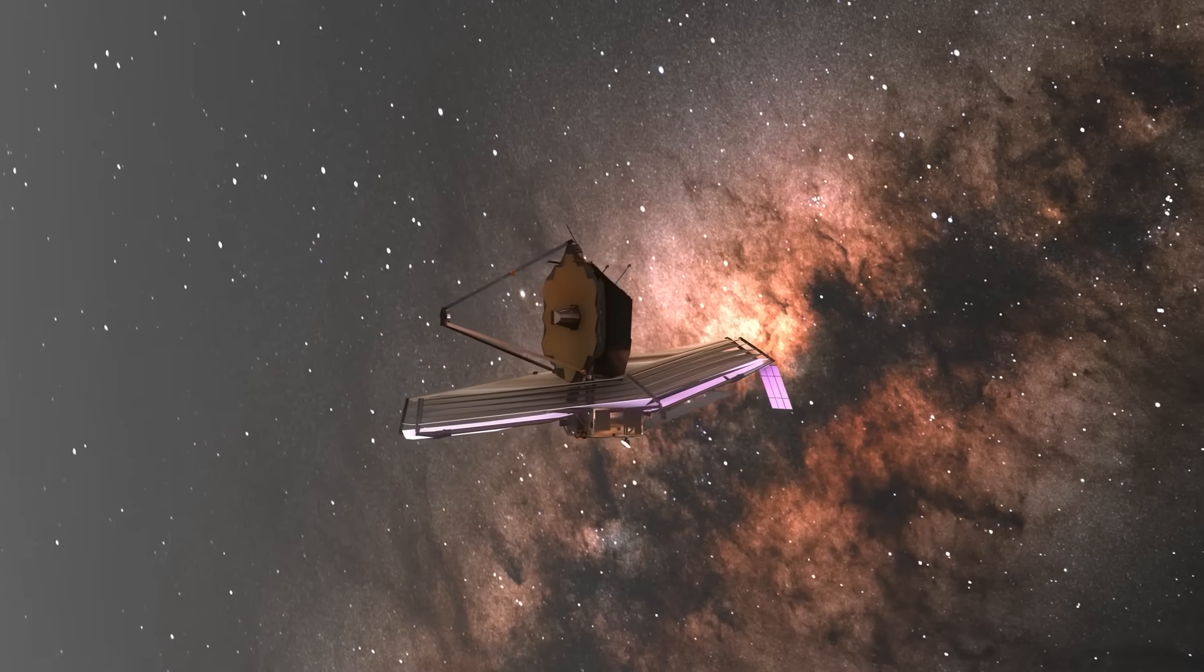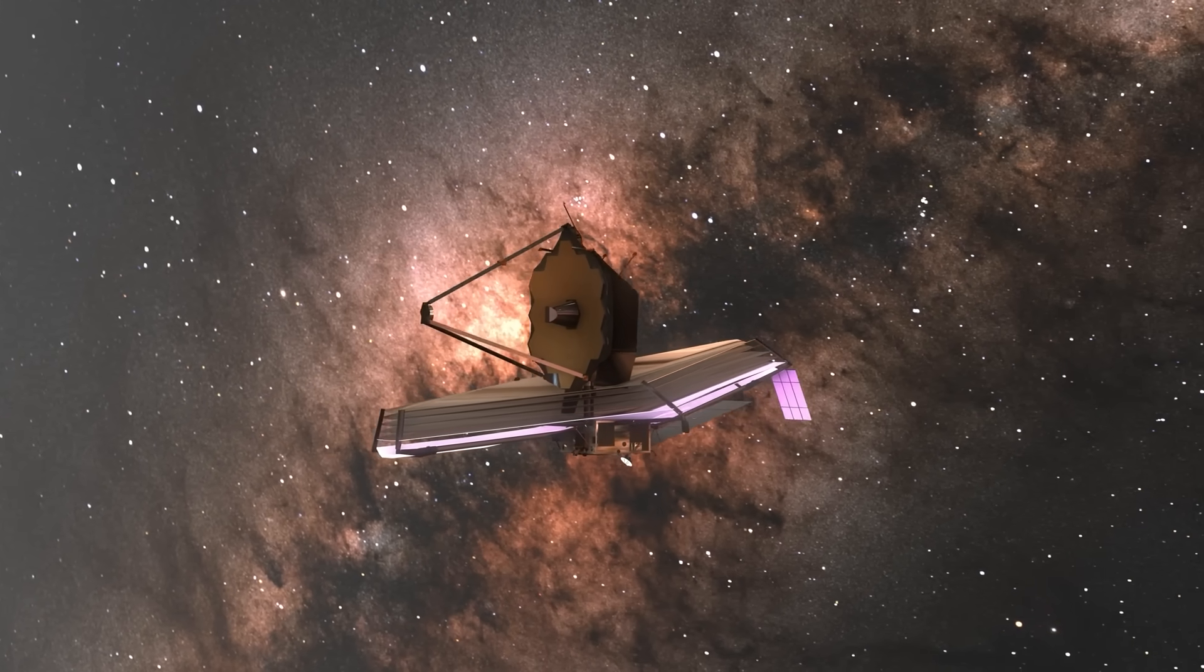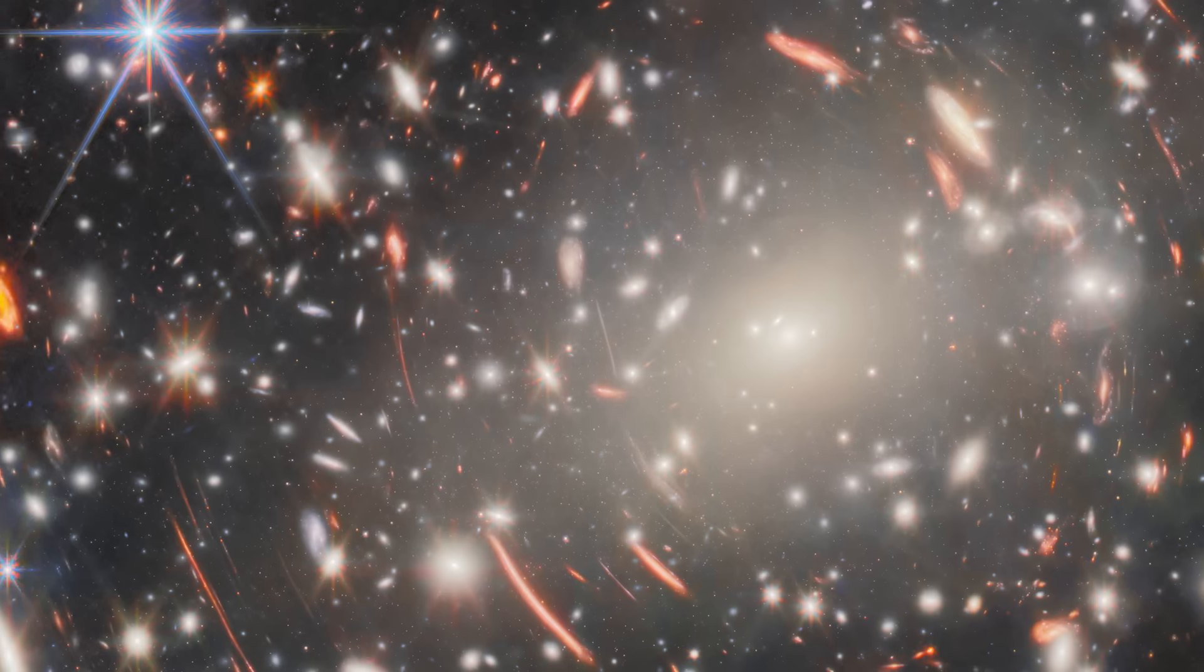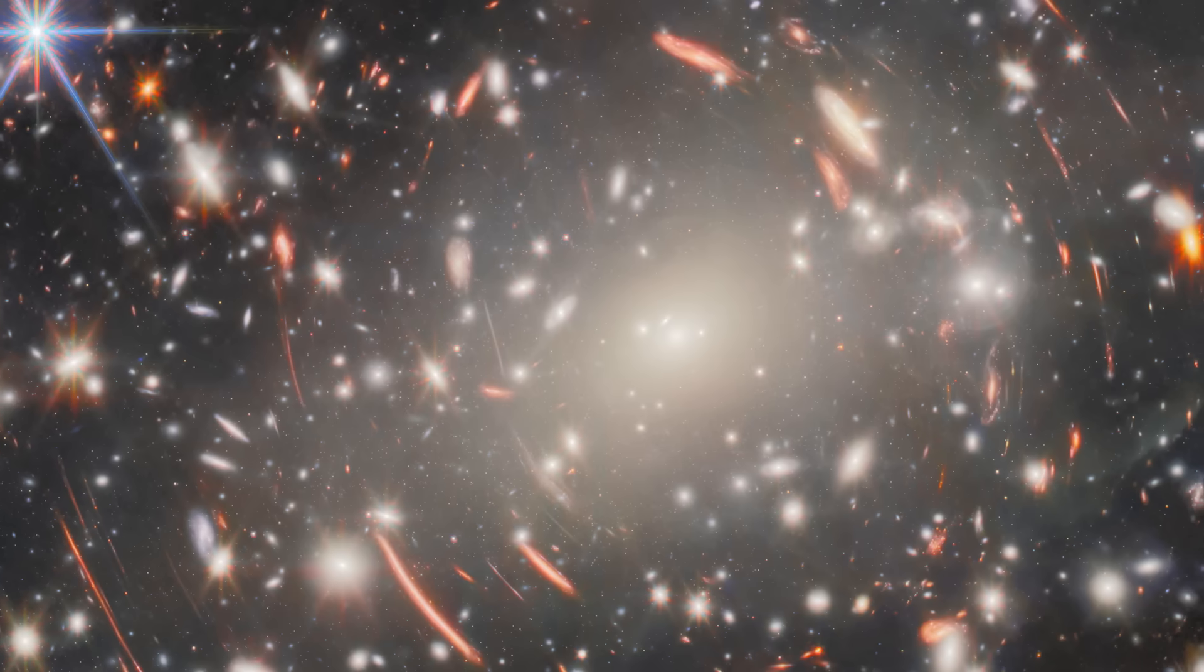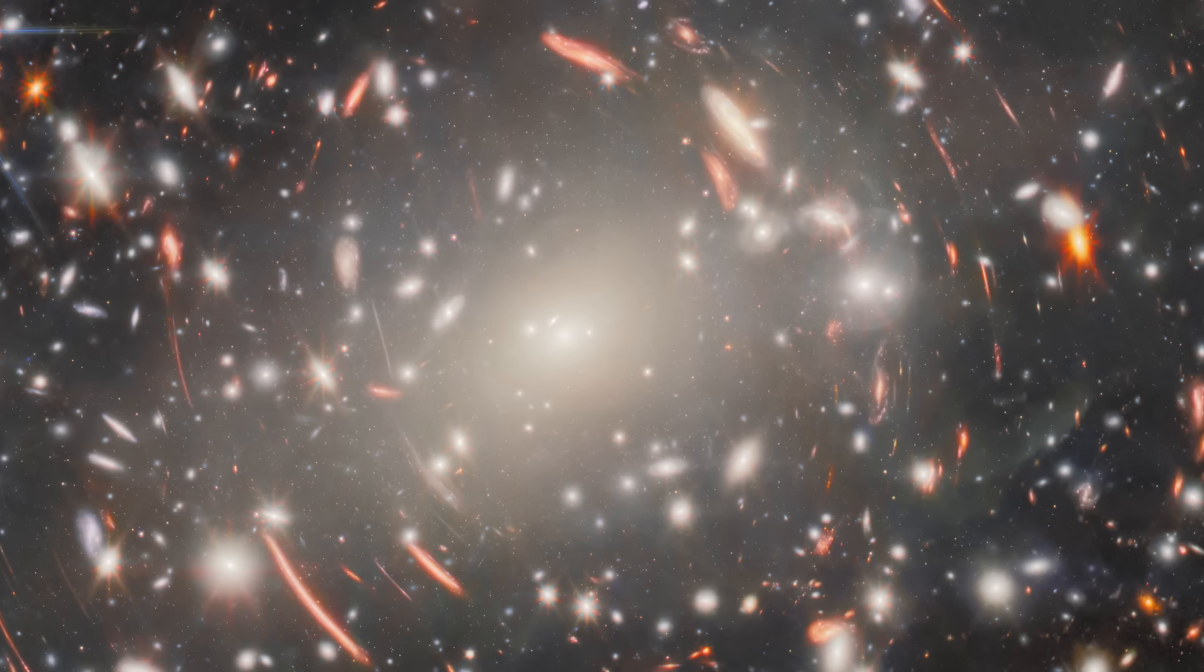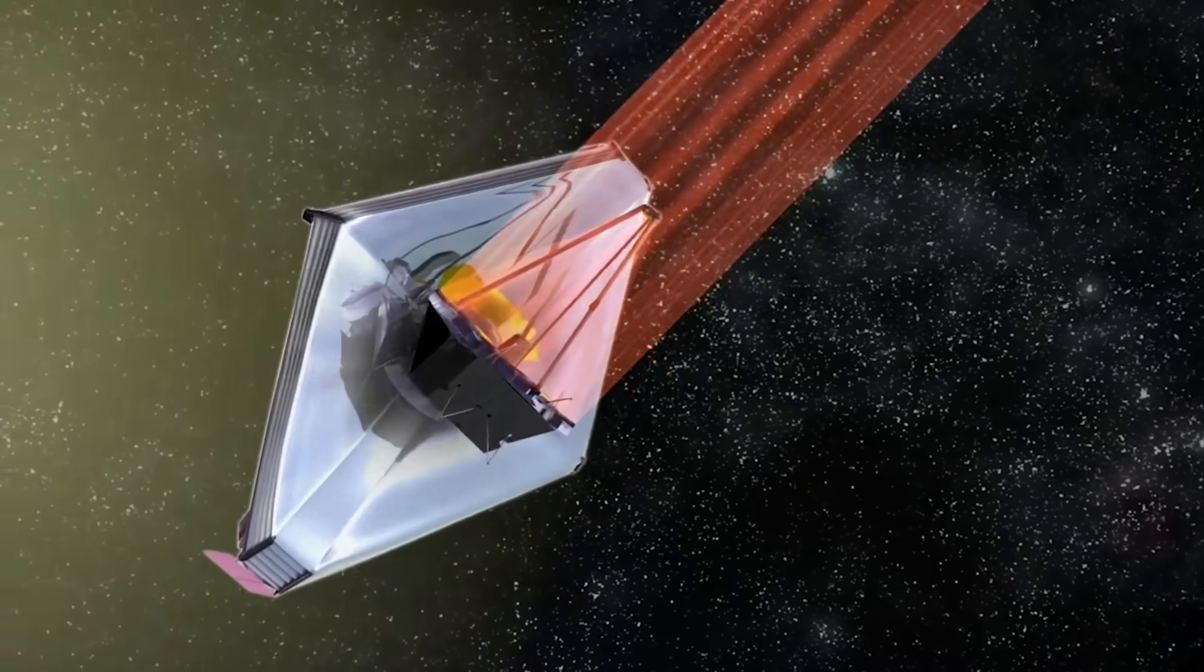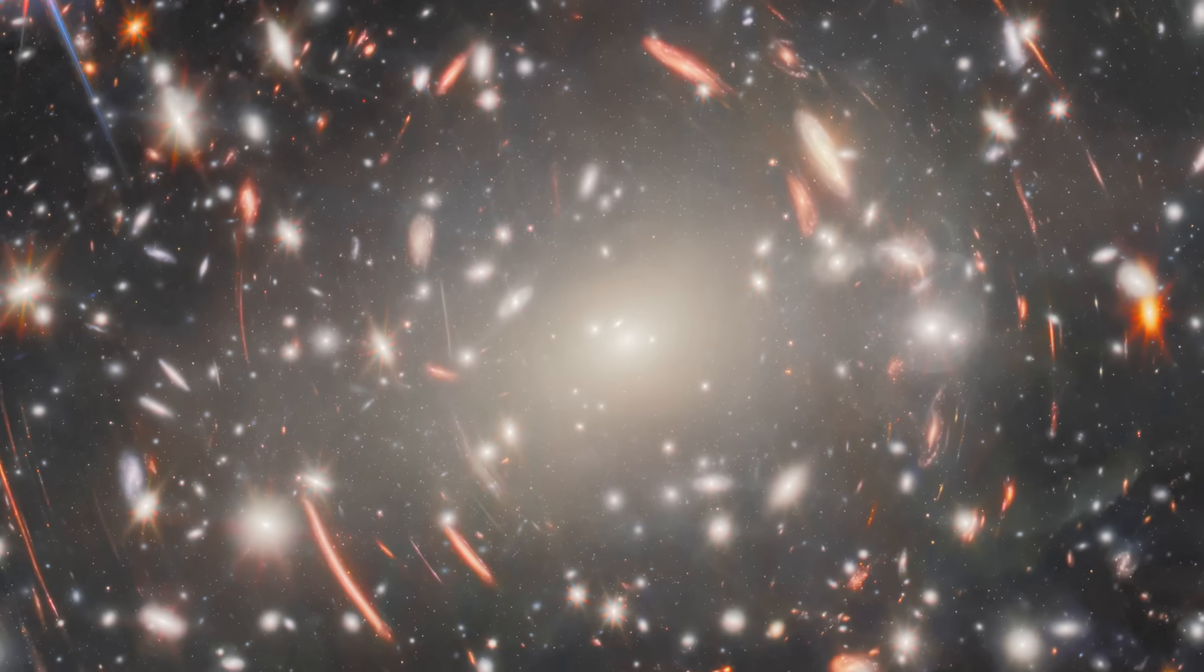To capture this image, Webb observed Abell S1063 for an incredible 120 hours, its longest exposure on a single target so far. Instead of one photo, this image is made from nine different exposures taken at various near-infrared wavelengths using Webb's near-infrared camera. These exposures were combined to gather as much light as possible and bring out the faintest and most distant galaxies ever seen.